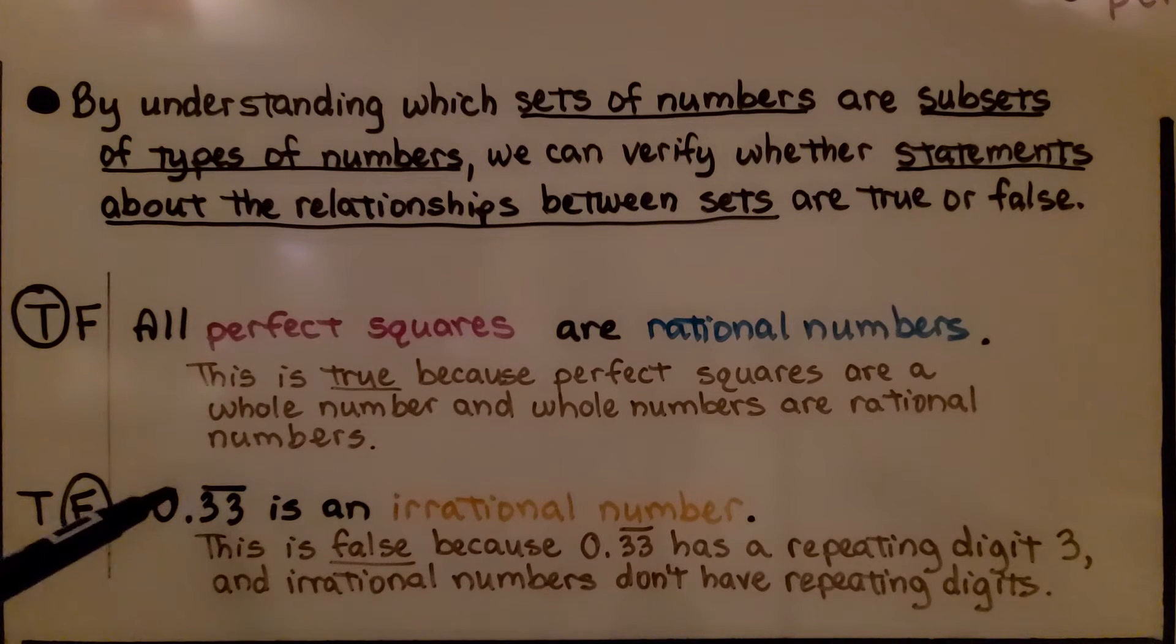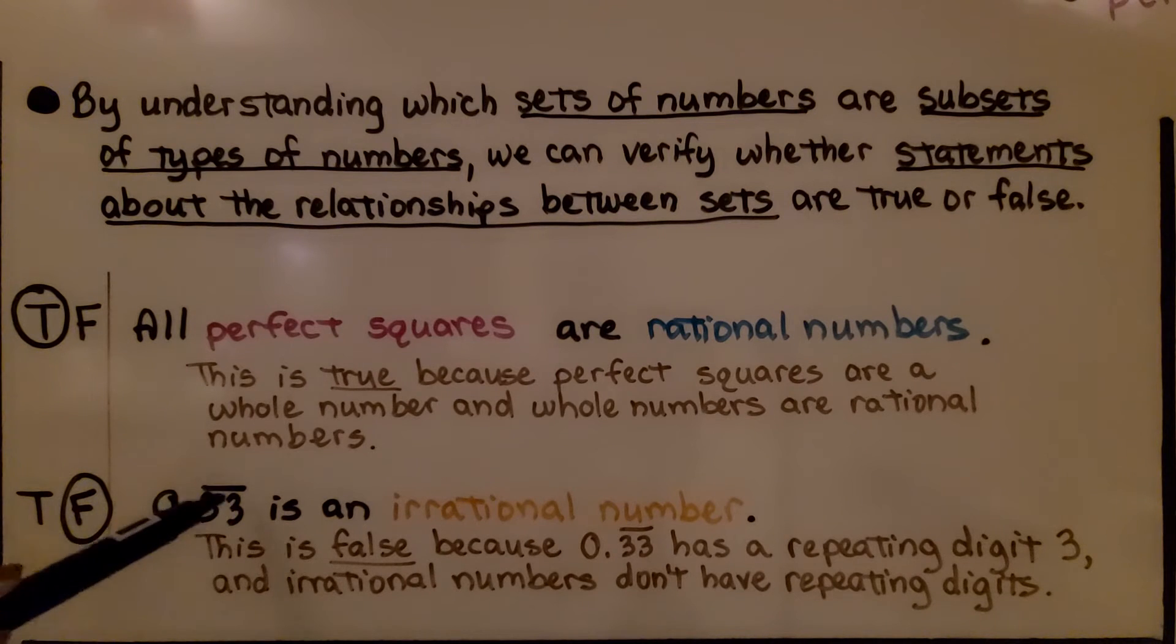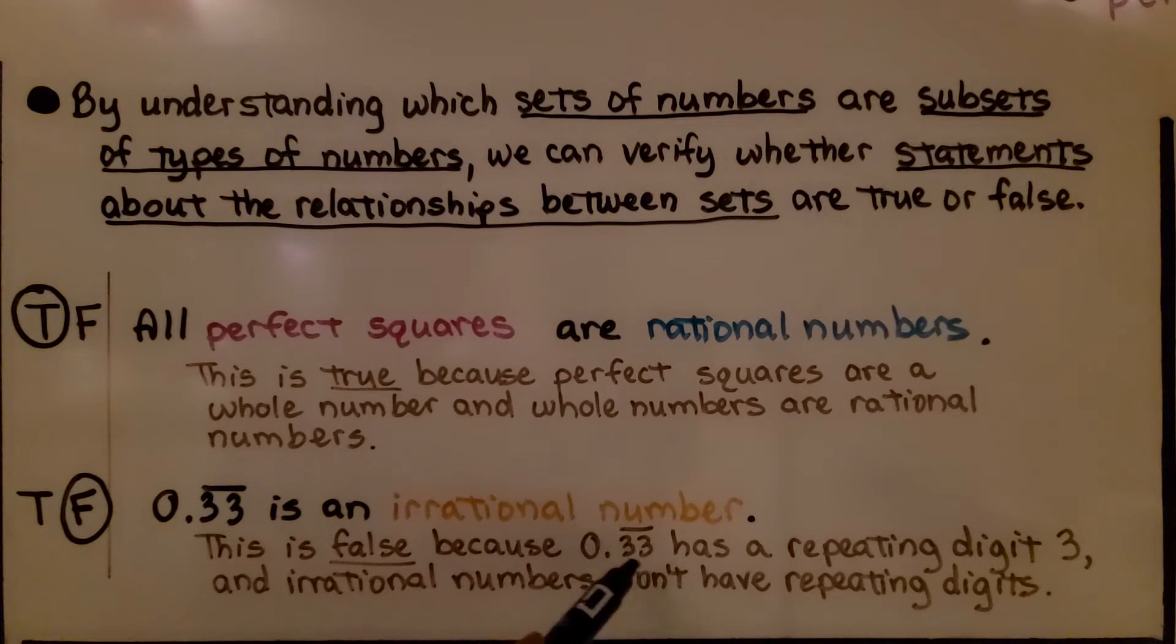Here it says 0.33 with the bar over the top showing this 3 is repeating. It's saying it's an irrational number. Well this is false, so I circled the F, because this decimal has a repeating digit 3, we know that from the bar on the top, and irrational numbers don't have repeating digits.